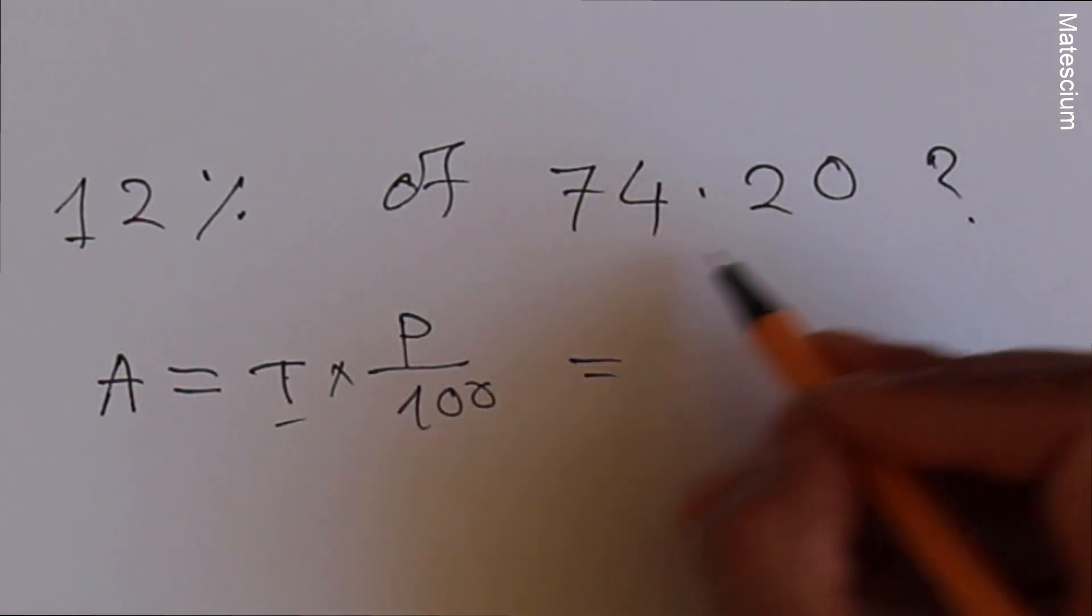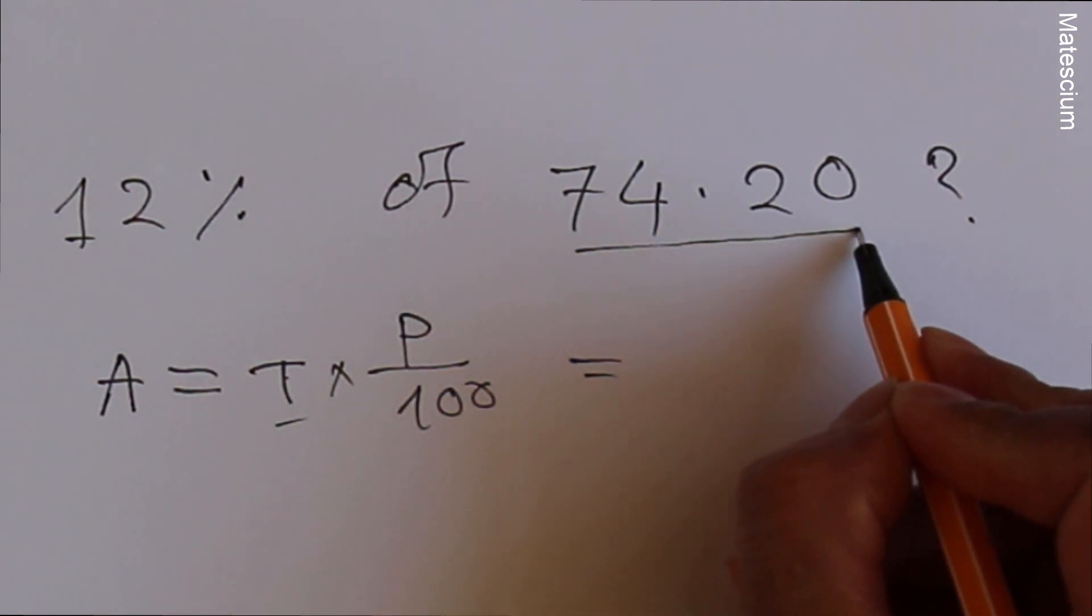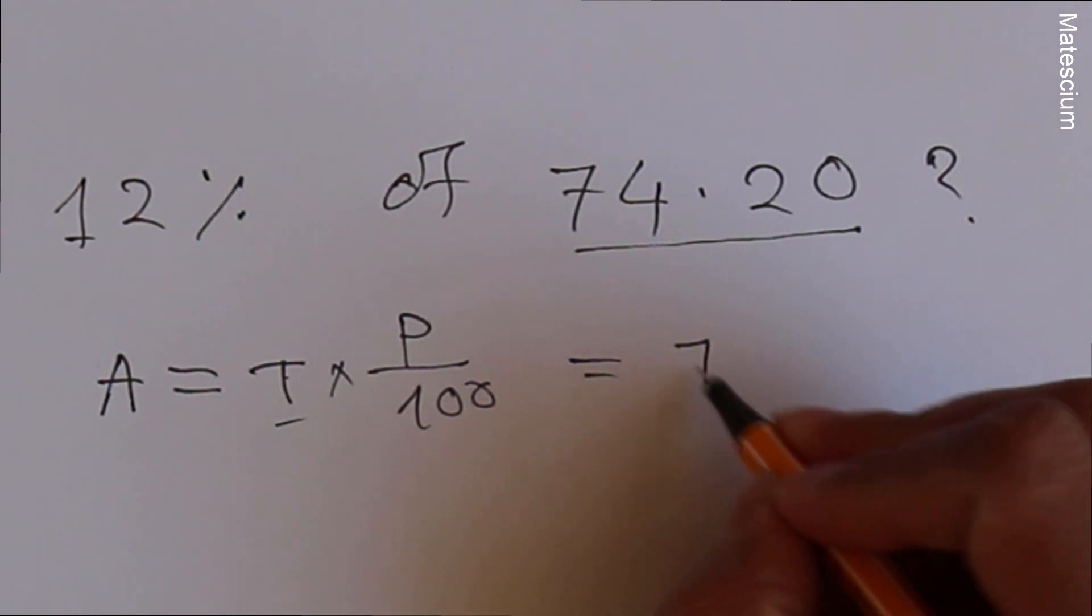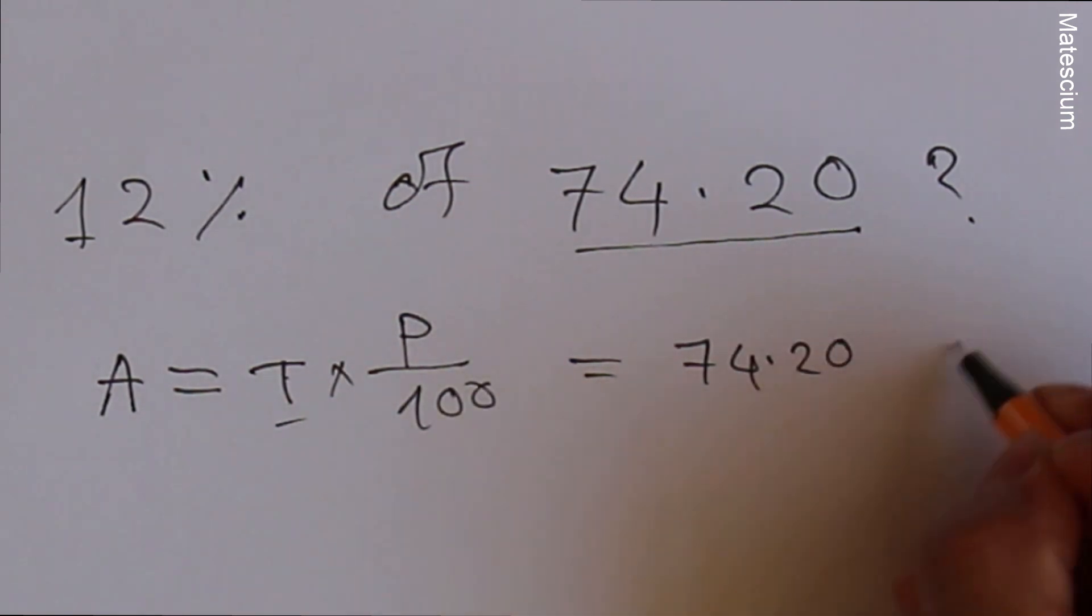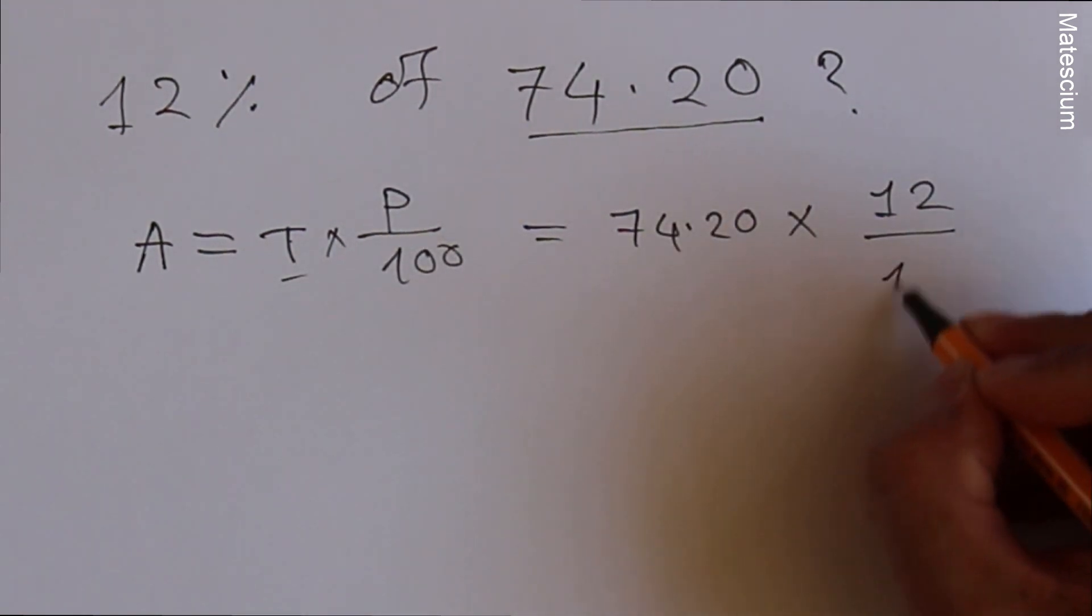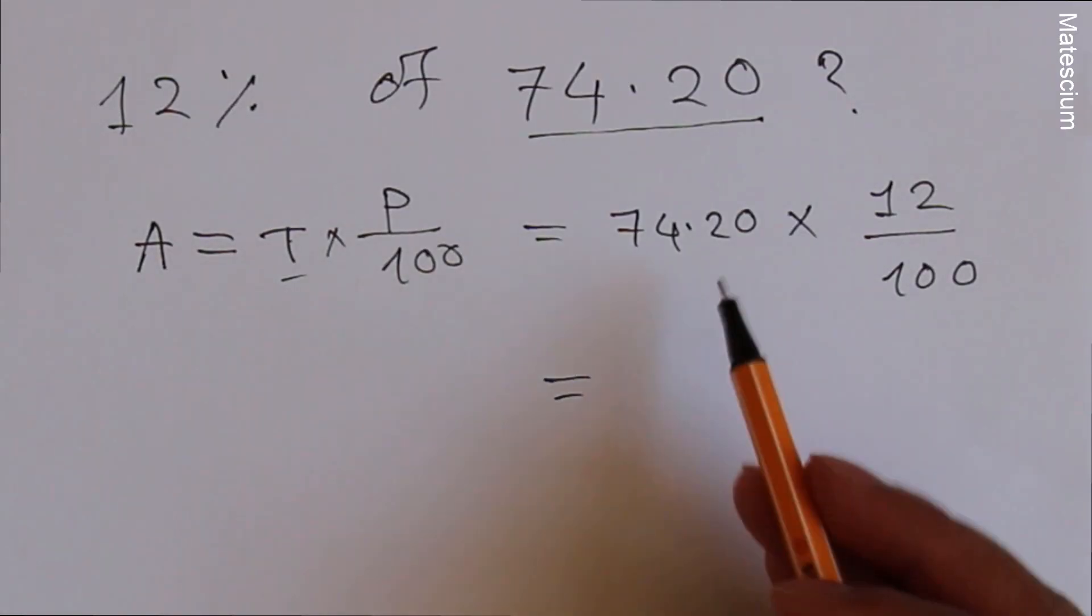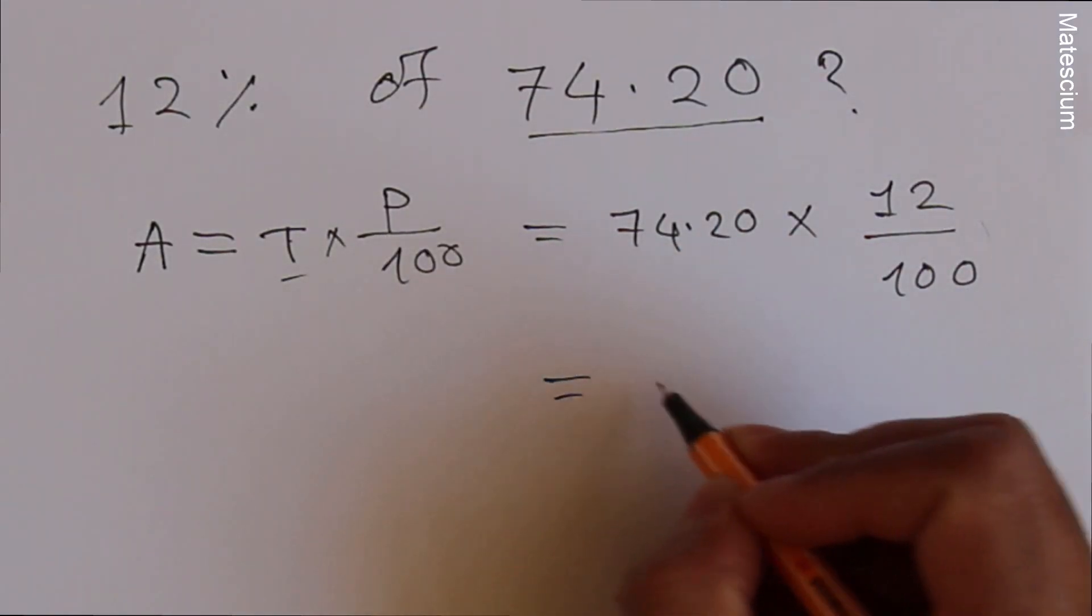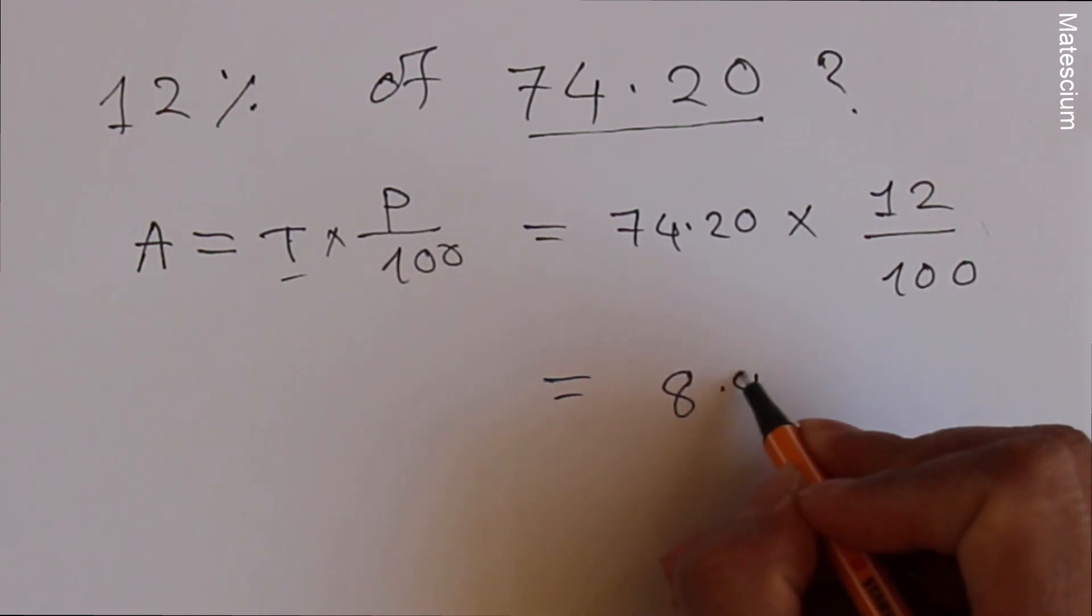So here T equals 74.20. That means total number 74.20 times P is 12 over 100. If you use your calculator here, you can see the final result is 8.9.